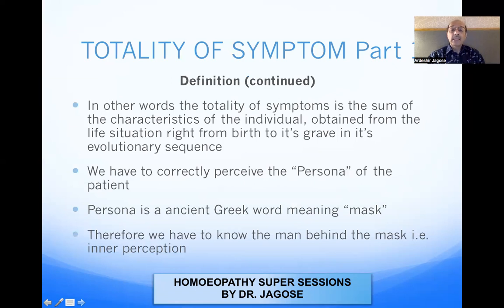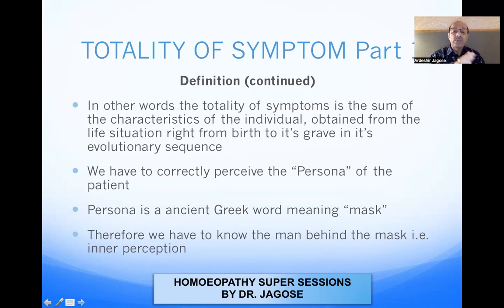In other words, the totality of symptoms is the sum of the characteristics of the individual obtained from life situation, right from birth to the grave, in its evolutionary sequence. When we form the totality, we have to trace the picture of the disease right from birth till the patient sees you, in its evolutionary sequence. That means, right from birth till the time the patient comes to your clinic, what are the different evolutionary march of events occurring in the patient's life?